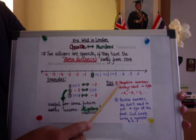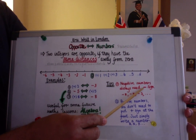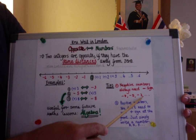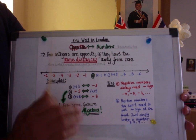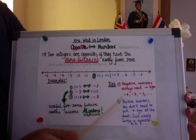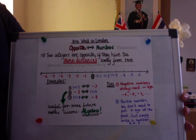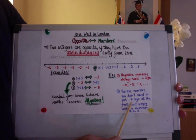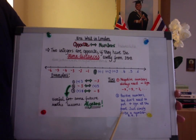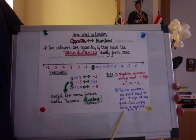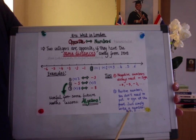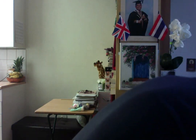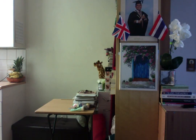Remember children: negative numbers always need the negative or the minus sign at the front. However, we don't put the positive sign in front of normal or positive numbers like 8, 5, and 3.